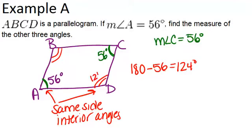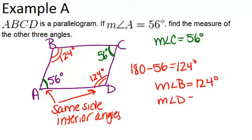So that means these other two angles, angle D and angle B, must each be 124 degrees. So the measure of angle B equals 124 degrees, and the measure of angle D also equals 124 degrees. So here are our three answers.